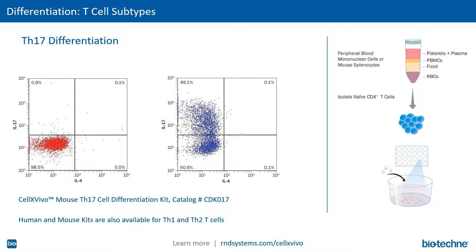In another example, naive T-cells obtained from mouse splenocytes were differentiated with the mouse CellXVivo TH17 differentiation kit. The left graph shows cells incubated without differentiating reagents express little of the TH2 marker IL-4 or the TH17 marker IL-17. In contrast, cells cultured for five days using protocols in the TH17 kit exhibit a significant upregulation of IL-17. Similar human and mouse kits are also available for TH1 and TH2 T-cell subsets, and I invite you to visit the website to see the supporting data.